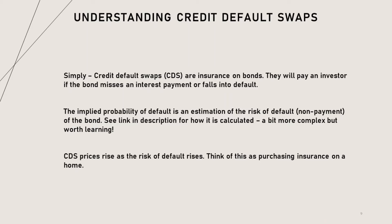So what are the bond insurance issuers saying about the Ukrainian and Russian bond markets? First, we have to understand credit default swaps. Simply, credit default swaps, or CDSs, are insurance on bonds. They will pay an investor if the bond misses an interest payment or if the bond falls into default. The implied probability of default is an estimation of the risk of default — non-payment in this case — of the bond. See a link in the description for how it's calculated; it's a little bit more complex, but it's worth learning. CDS prices rise as the risk of default rises.